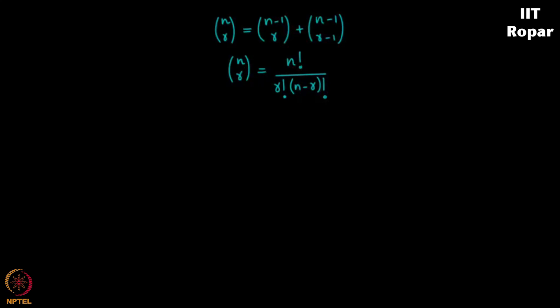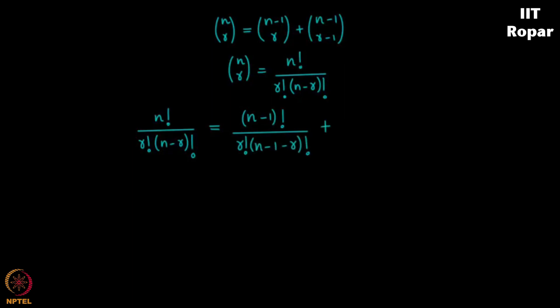That becomes your left hand side. Now what is the right hand side? n minus 1 choose r becomes n minus 1 factorial divided by r factorial times n minus 1 minus r factorial, plus n minus 1 choose r minus 1 which becomes n minus 1 factorial divided by r minus 1 factorial into n minus 1 minus r plus 1 factorial.